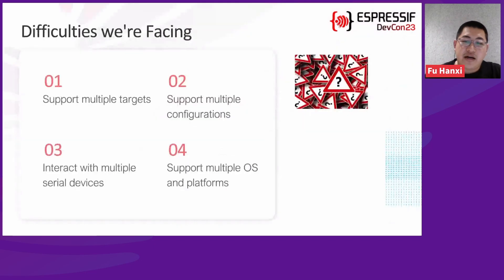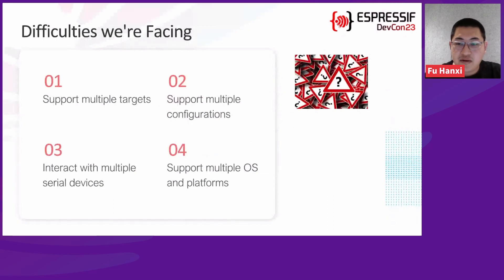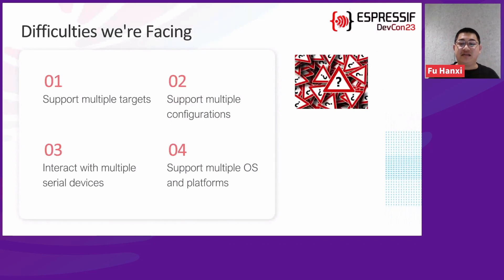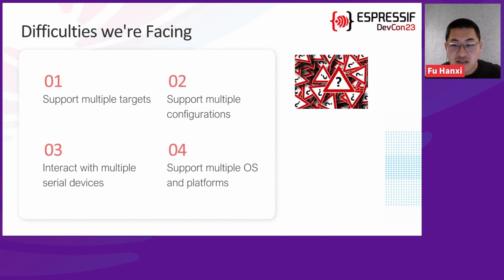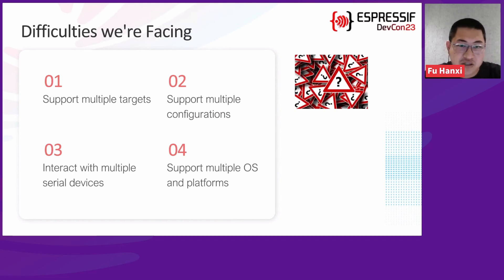When implementing our CI/CD process, we face some difficulties. The first one is that we release new target chips every year. Besides, we also need to continue to support old released chips. This kind of workflow makes our test matrix grow larger and larger.